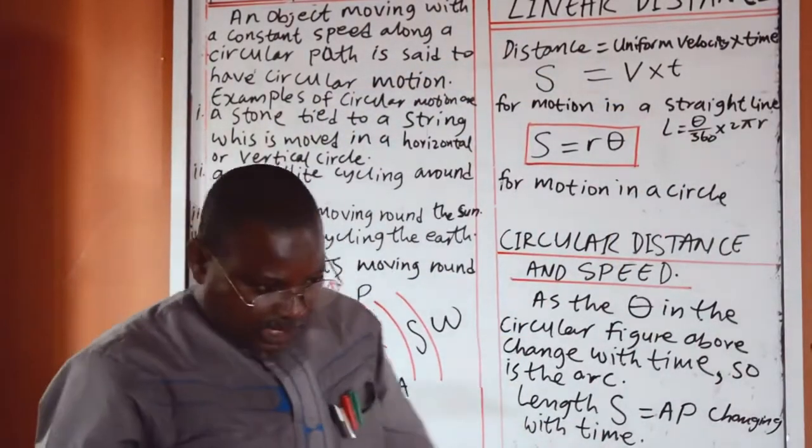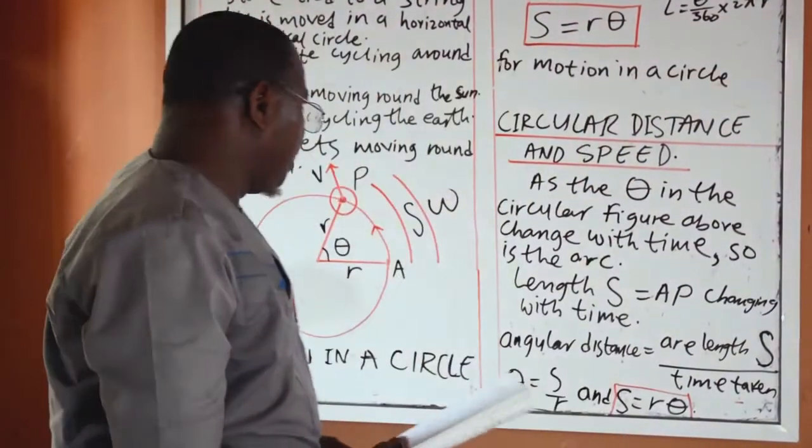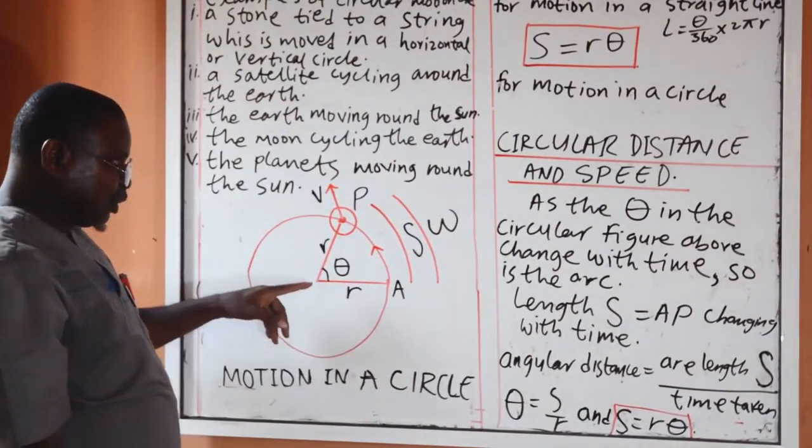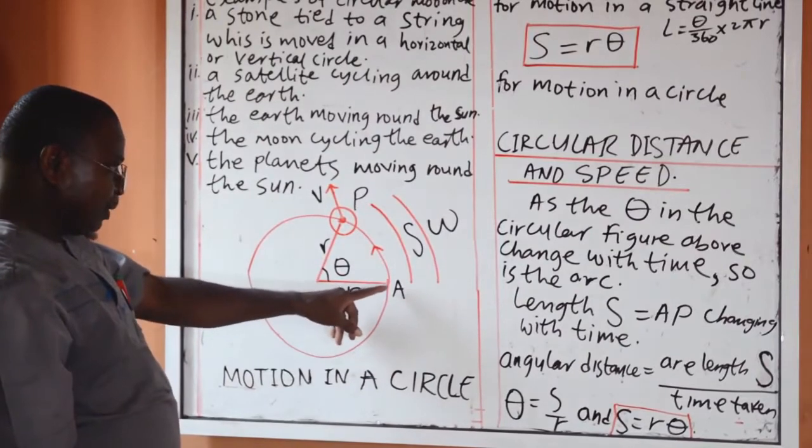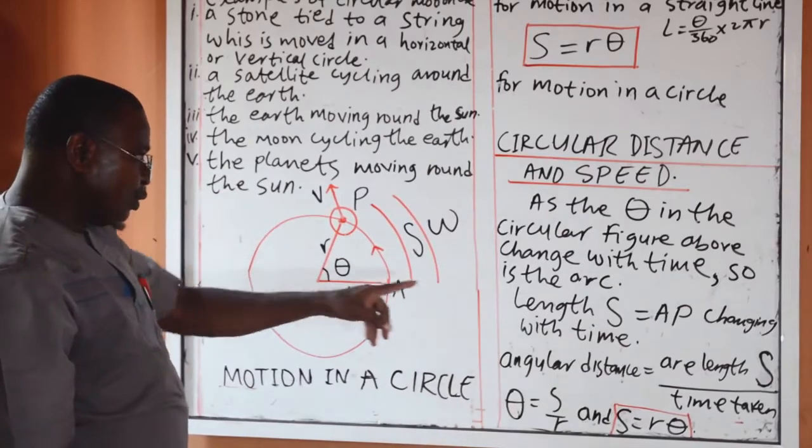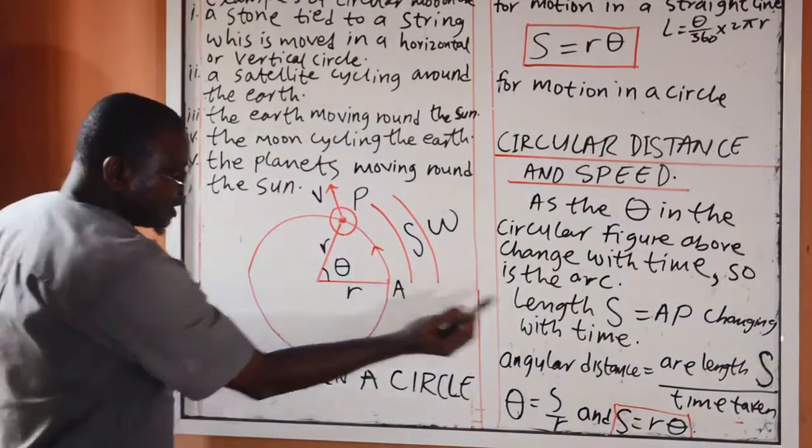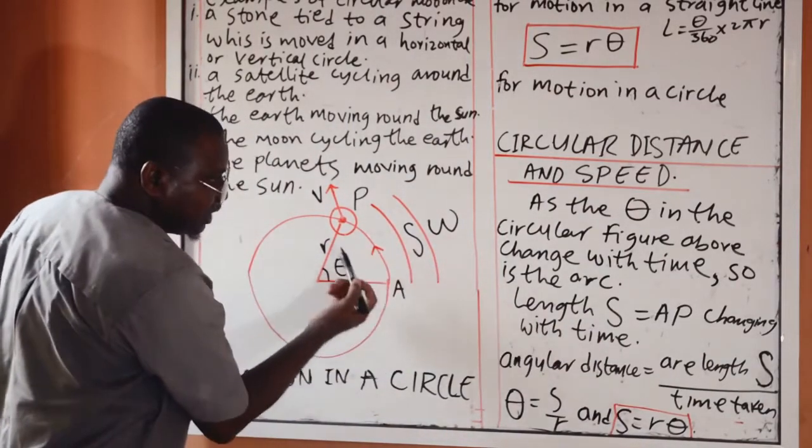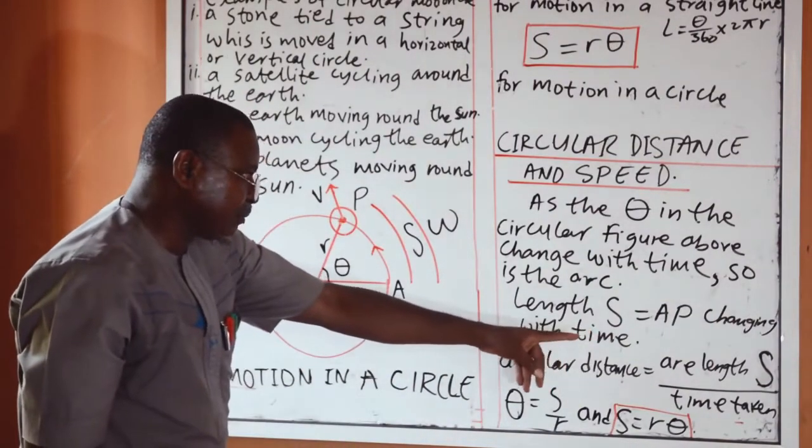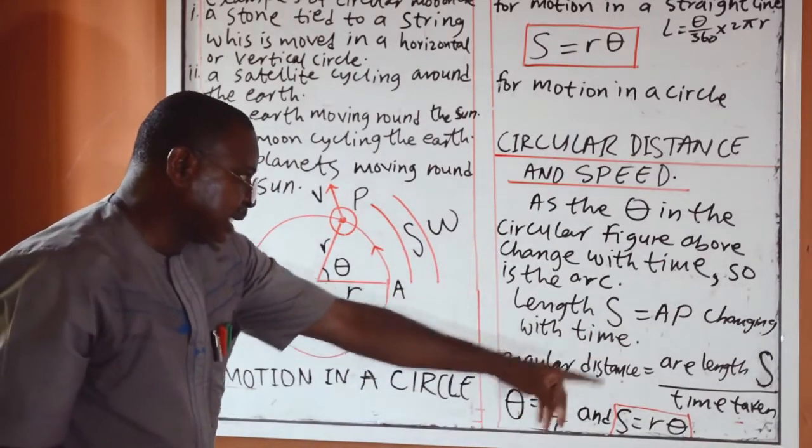Now, circular distance in full. As the angle or theta in the circular figure both change, when you are moving anticlockwise, it is the arc. That is the arc. This arc will also change. So, if we use s to represent the distance along the arc, s is equal to AP. As this length is changing.